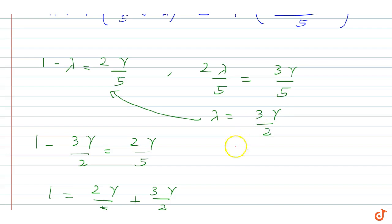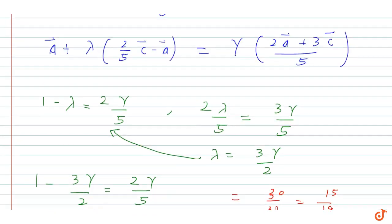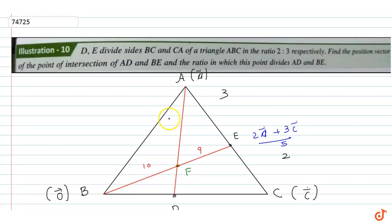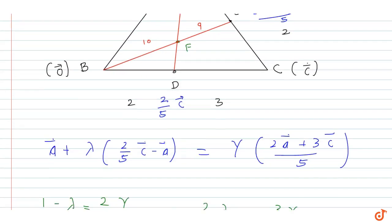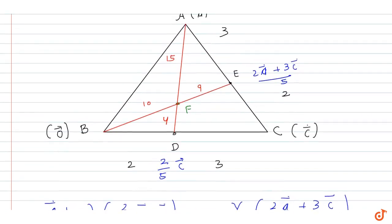Lambda = 3 times gamma / 2 = 3 times (10/19) / 2 = 30/38 = 15/19. Since lambda represents the fraction of the total length AD, the ratio in which F divides AD is 15:4.